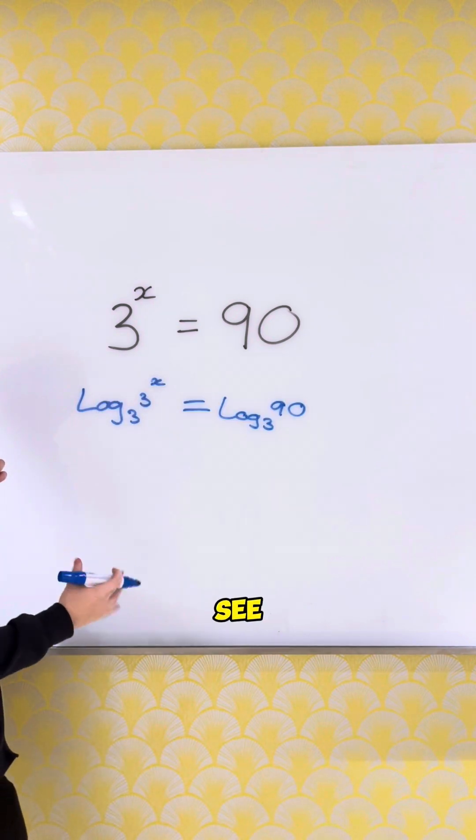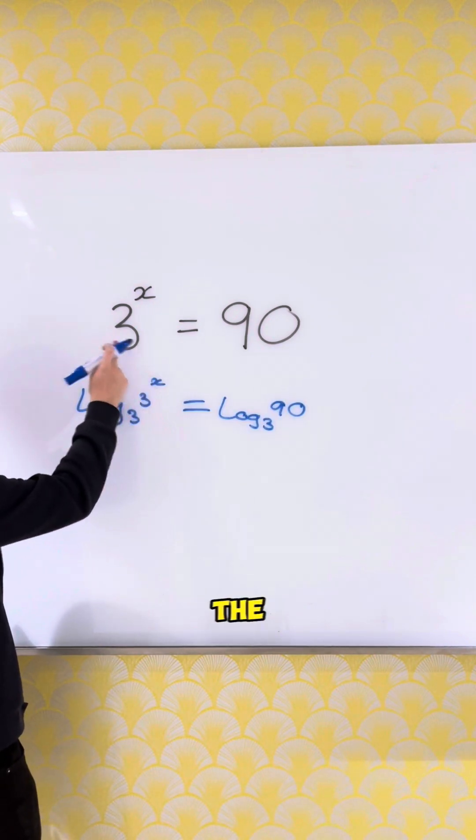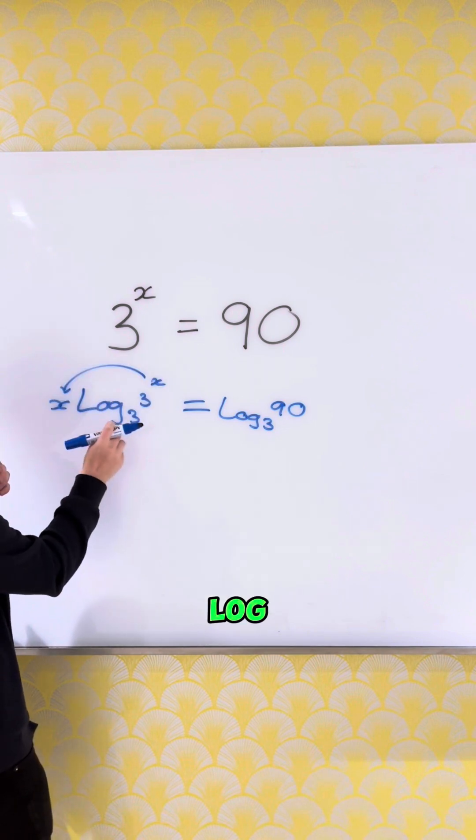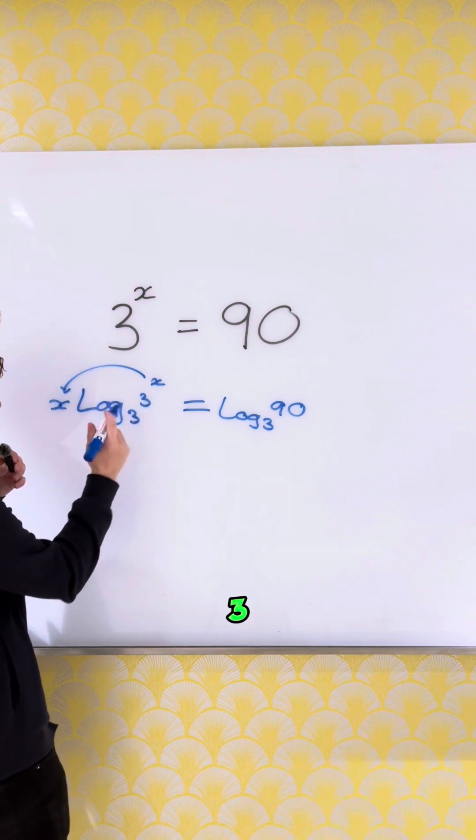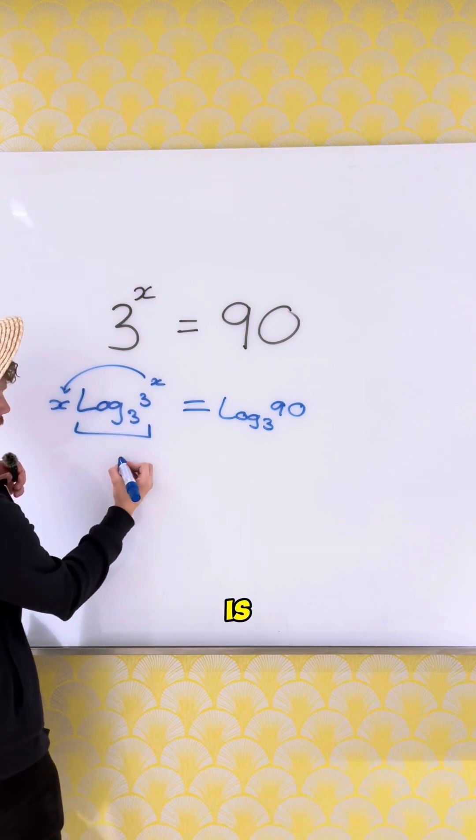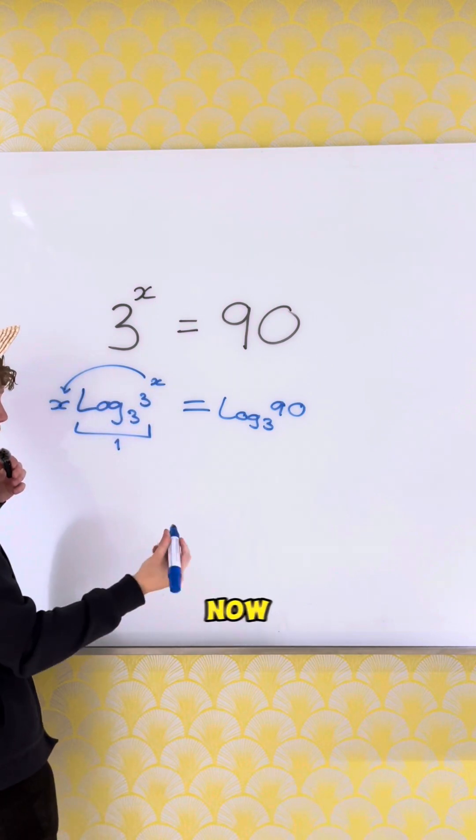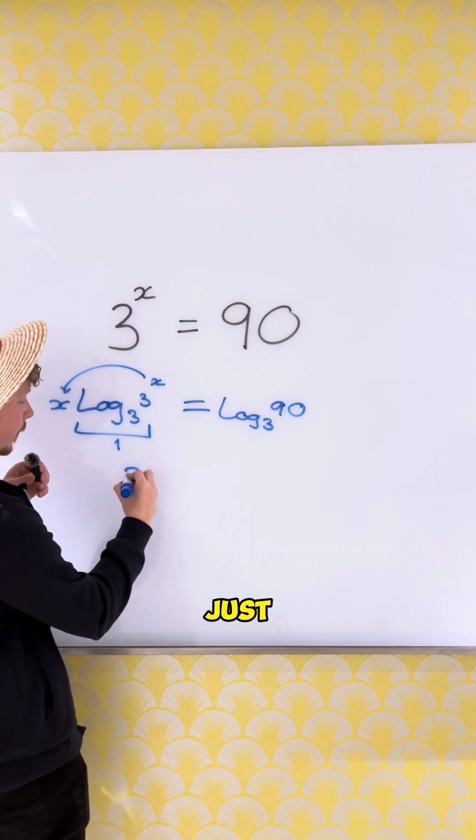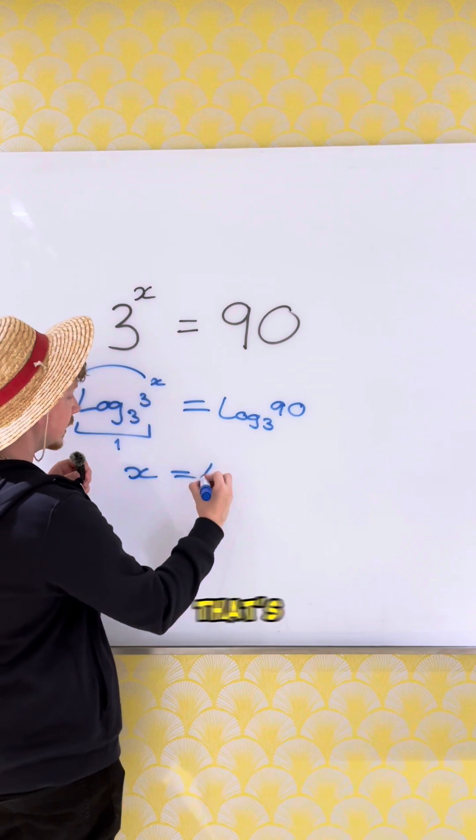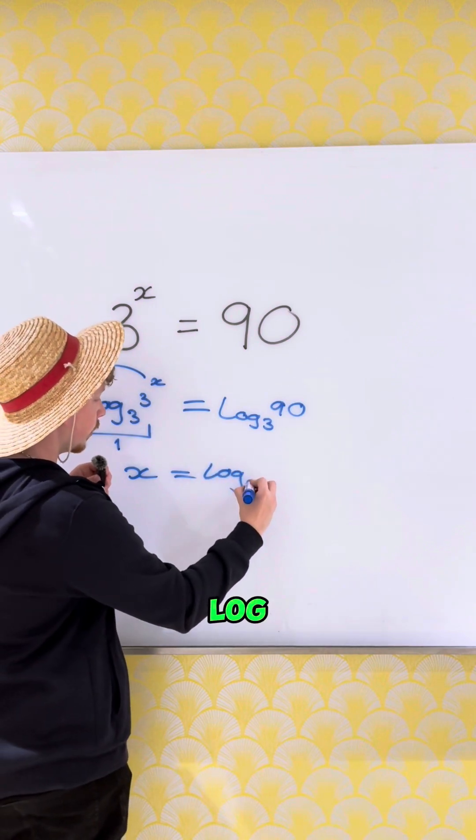I can bring the x down here. Log base 3 to the power of what is 3? We know that's just 1, right? So we can now write this side as just x, and that's equal to log base 3 of 90.